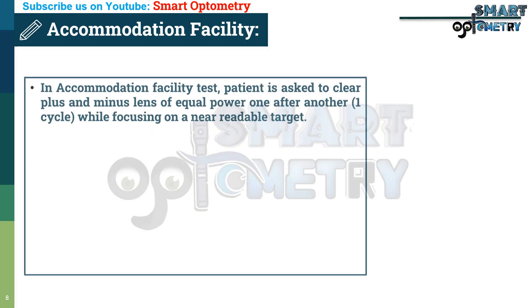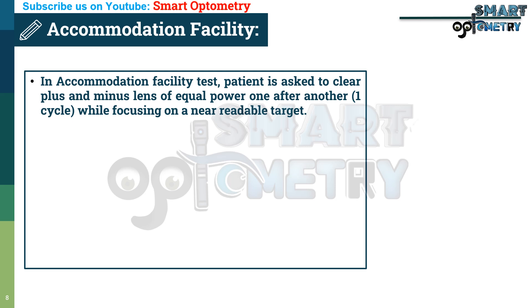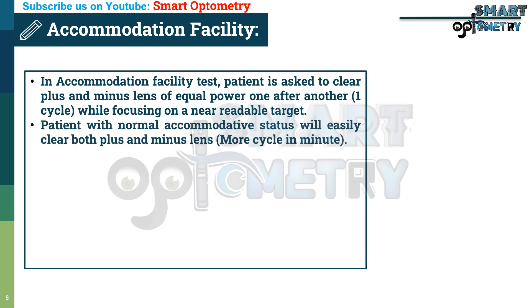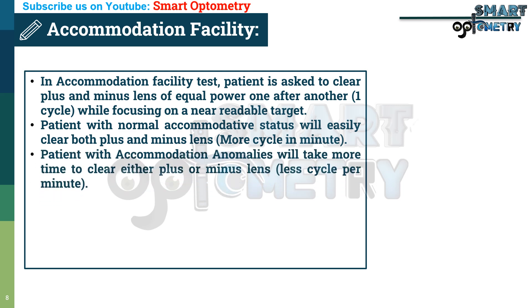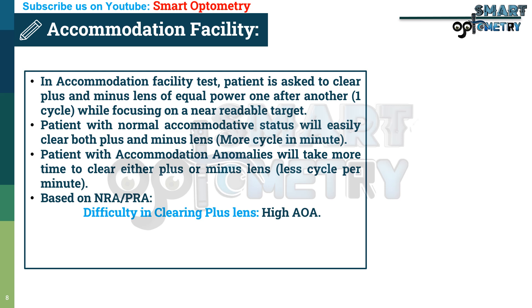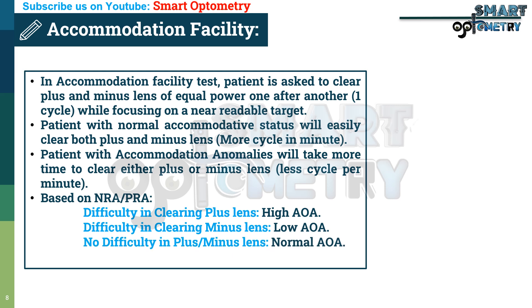In the accommodation facility test, the patient is asked to clear plus and minus lenses of equal power one after another while focusing on a near readable target. Patients with normal accommodative status will easily clear both plus and minus lenses and will complete more cycles per minute. Patients with accommodation anomalies will take more time to clear either plus or minus lenses and complete fewer cycles per minute. Difficulty clearing plus lenses indicates high amplitude of accommodation; difficulty clearing minus lenses indicates low amplitude of accommodation; no difficulty with either indicates normal amplitude of accommodation.